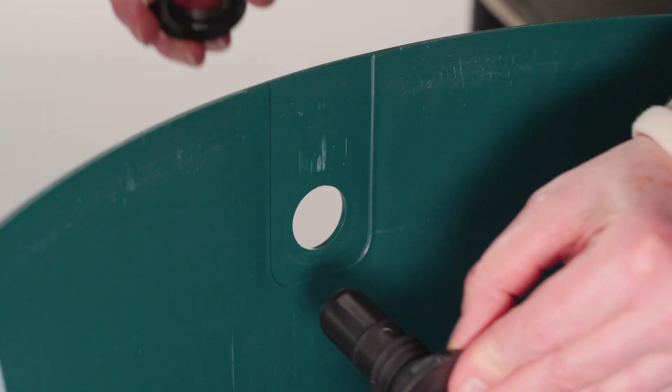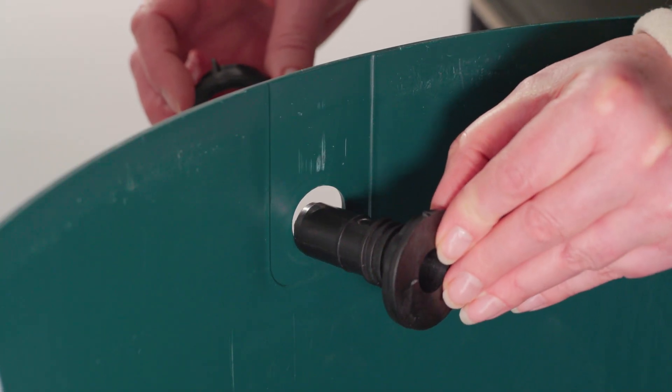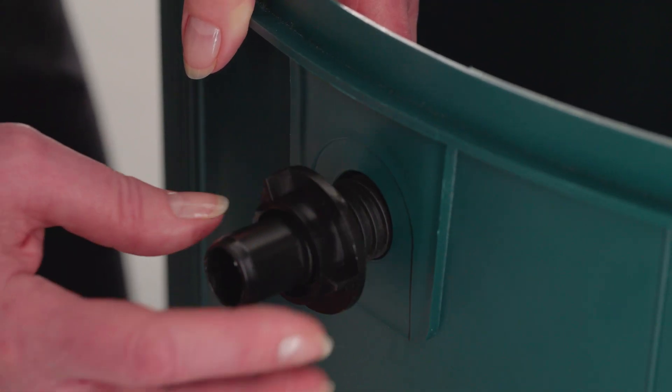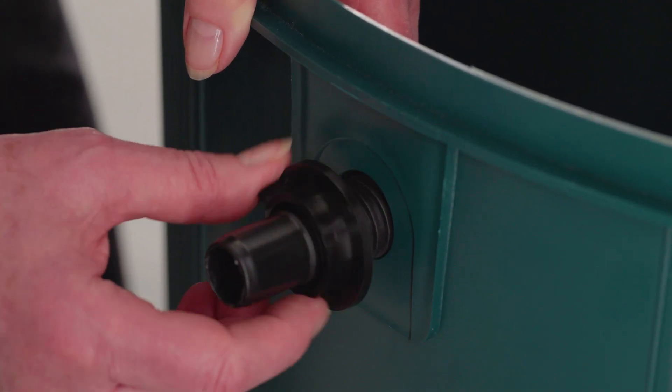Attach the downpipe bayonet in place on one side of the top section, closest to the drainpipe. Make sure the washer is on the inside of the butt wall and hand tighten.